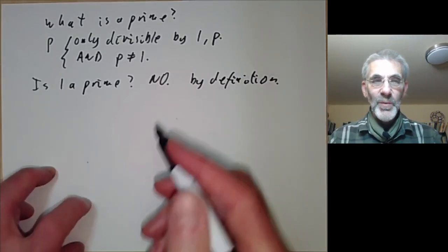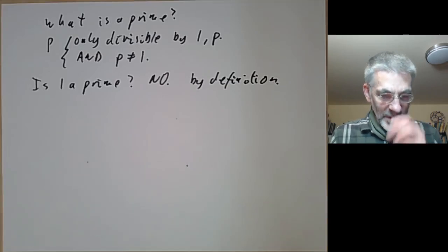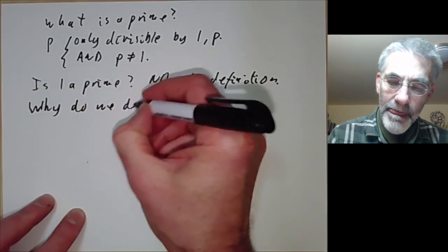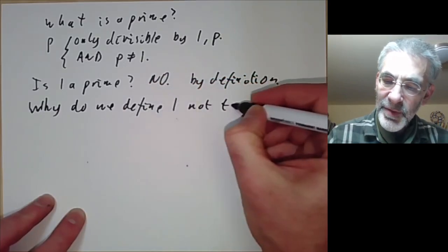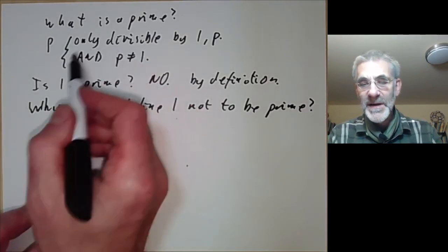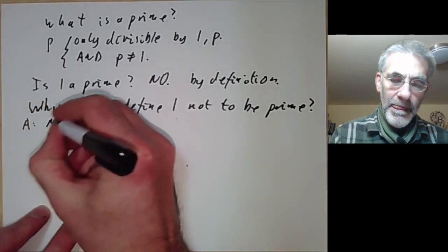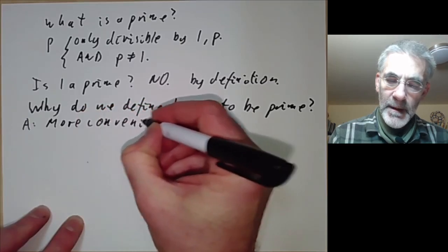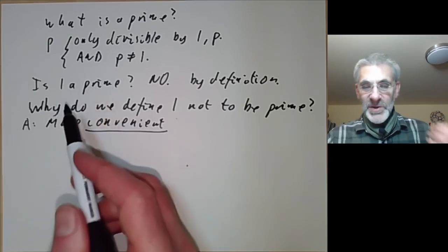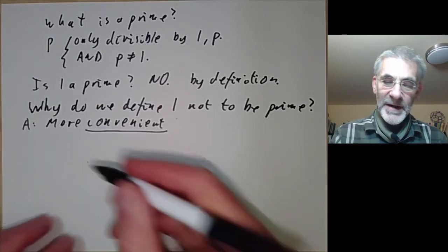So people will sometimes argue about whether or not 1 is a prime. This is a kind of silly argument because it's defined not to be a prime. The real question is why is it defined not to be a prime? So why do we define 1 not to be prime? Because I mean the definition would be simpler if we actually missed out this condition here. Well the answer is it's more convenient. So we're defining 1 saying that 1 isn't a prime not because it's true that 1 isn't a prime but because it's convenient to use a definition of prime that excludes 1.